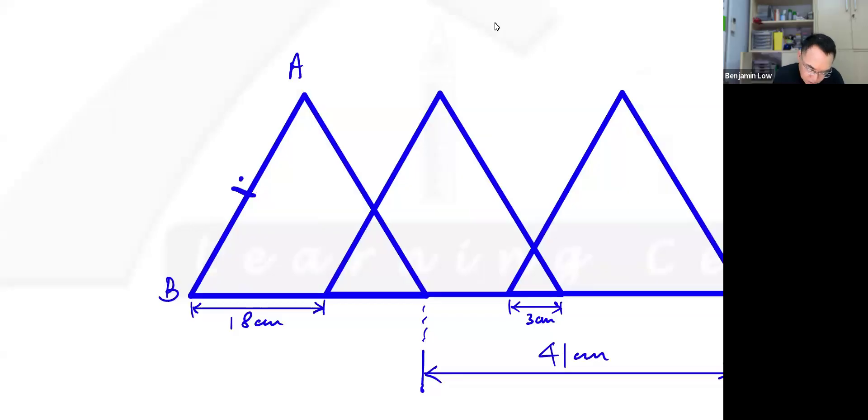So equilateral means equal-sided triangles. This side equals this, equals this, equals this—all sides are equal. Now, in order not to dirty the diagram, I'm just going to remove this. Understand that the sides are equal.